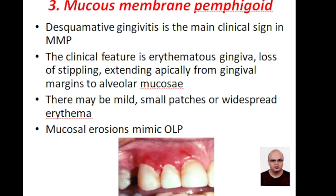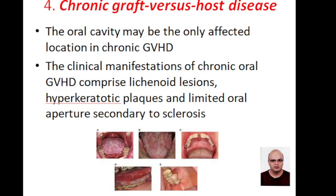Desquamative gingivitis is the main clinical sign in mucous membrane pemphigoid. The clinical feature is erythematous gingival loss of stippling which extends from gingival margins to alveolar mucosa. These may be mild, in the form of small patches, or sometimes widespread. Mucosal erosions mimic oral lichen planus.